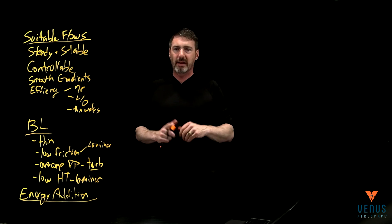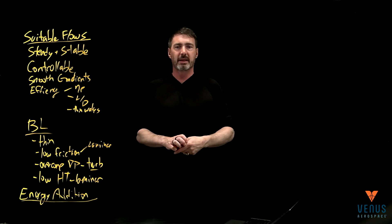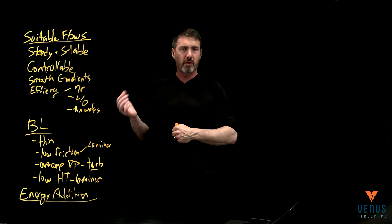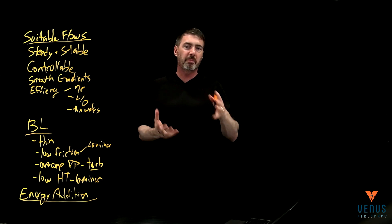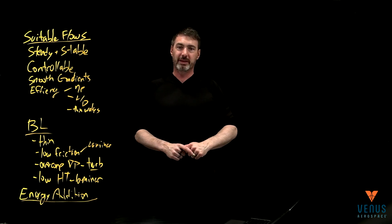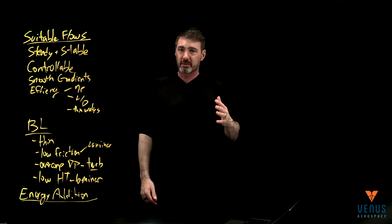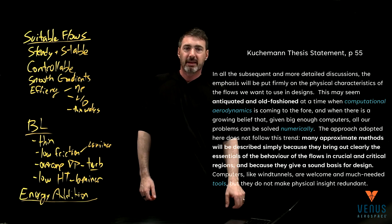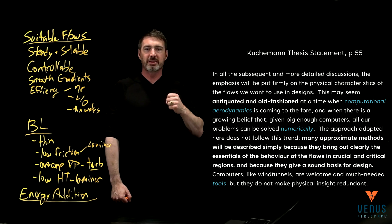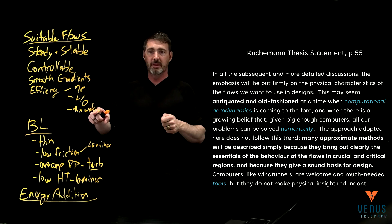And so really, the chapter then ends with ultimately these building blocks into the final thesis statement. And it's nice to kind of have, think of all we've covered on chapter one and chapter two to kind of round it up before we then do deeper dives into more physics, right? There'll be more equations as I go into chapter three and beyond, but to sort of end with this thesis statement. So I wrote it up and I'm going to read it verbatim because it's powerful. Again, this is 1970s and it's on page 55, but in all the subsequent and more detailed discussions, the emphasis will be put firmly on the physical characteristics of the flows we want to use in the design, right? This stuff, the physical characteristics.